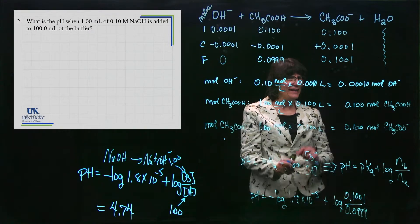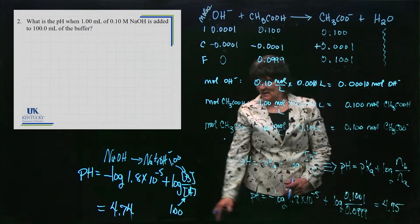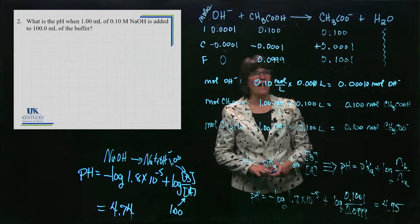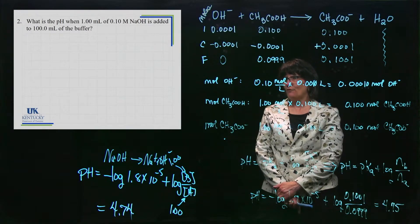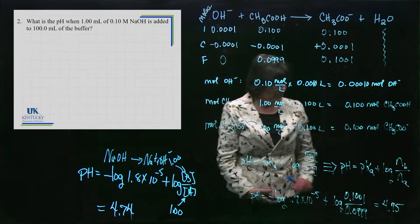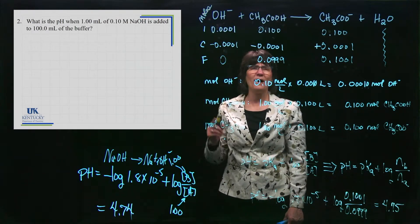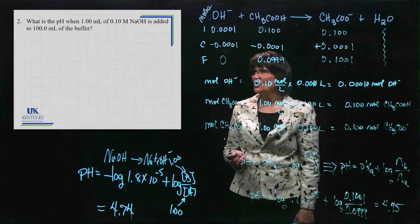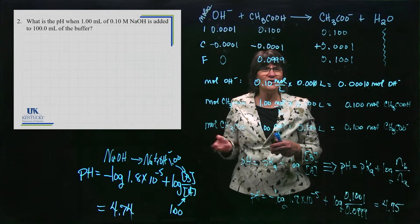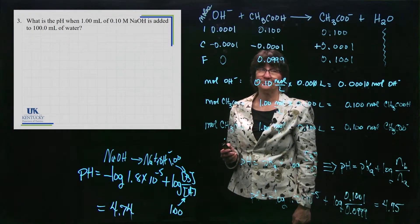If you keep all your numbers in your calculator without rounding in the middle, you may get 4.75 instead of 4.74 — it's always best to wait and round at the very end. So the pH after adding base is 4.75, compared to 4.74 before. That is certainly resisting change to pH. You might think: of course it didn't change much — it's only 1 milliliter of base added to 100 milliliters of buffer. What if you added that same amount to plain water instead?